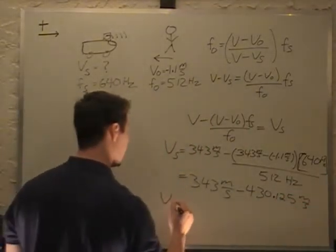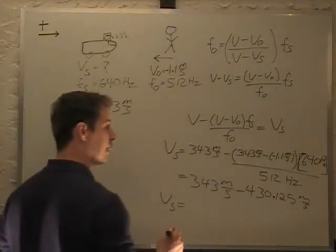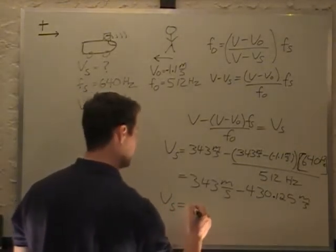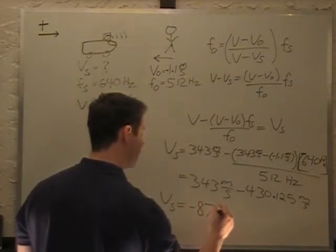As you can see, our answer turns out negative. We get negative 87 after rounding, meters per second, for two significant digits.